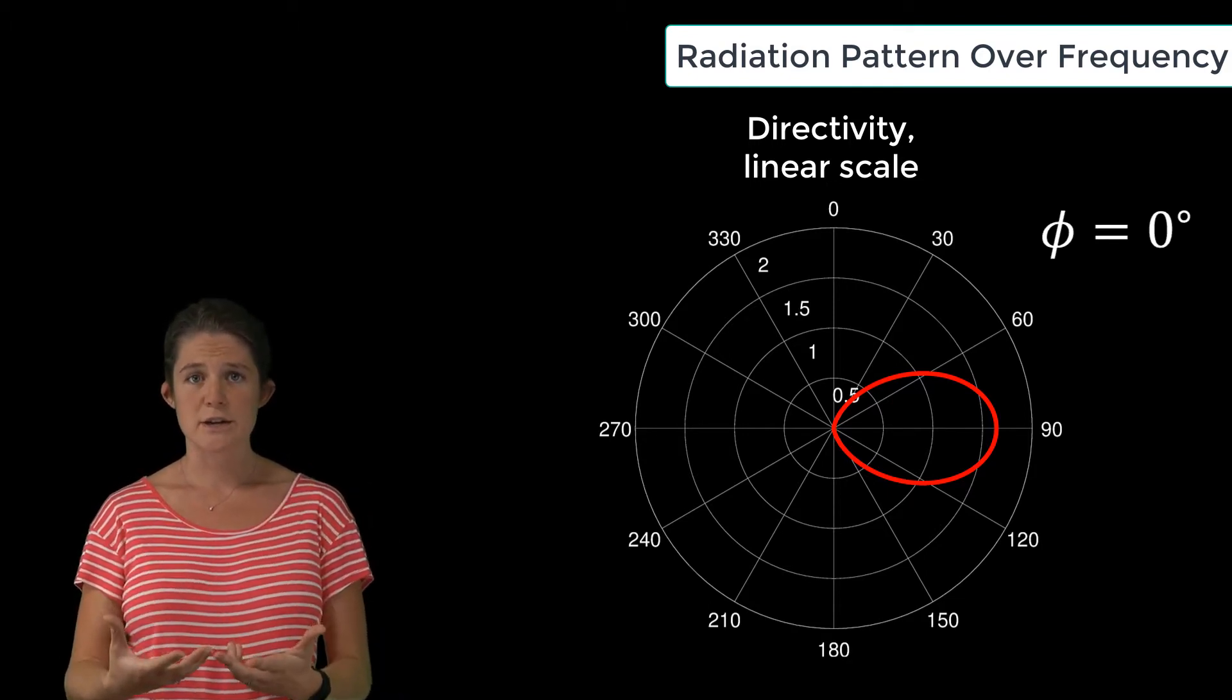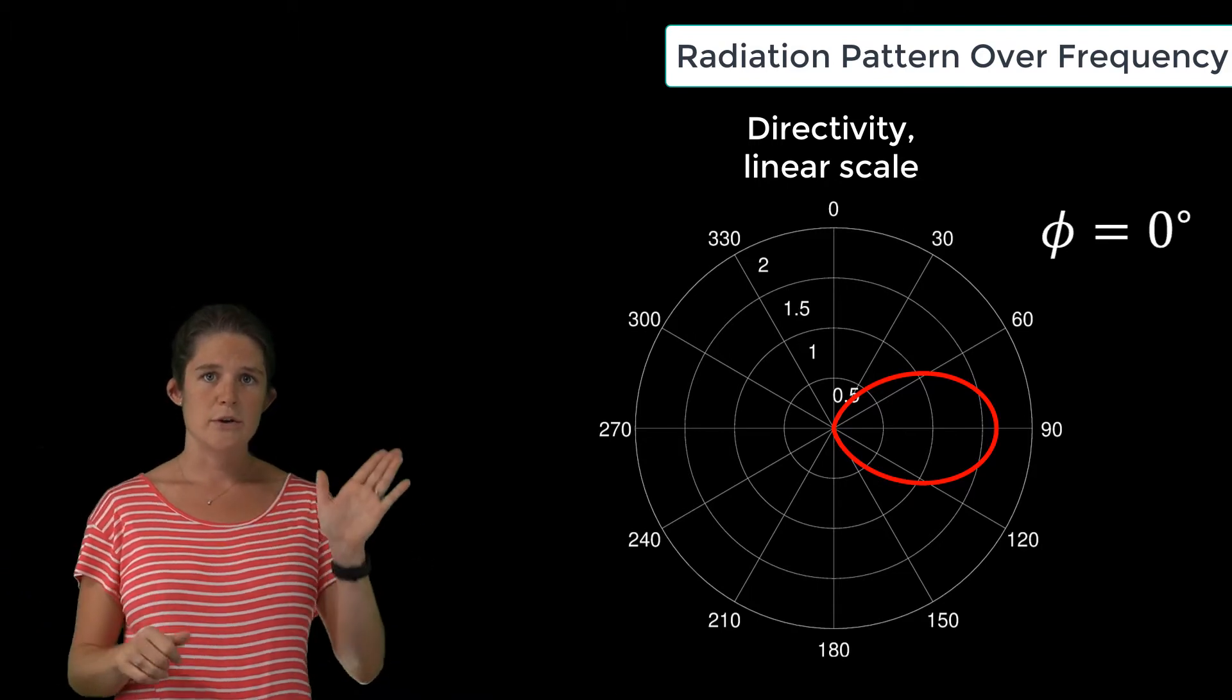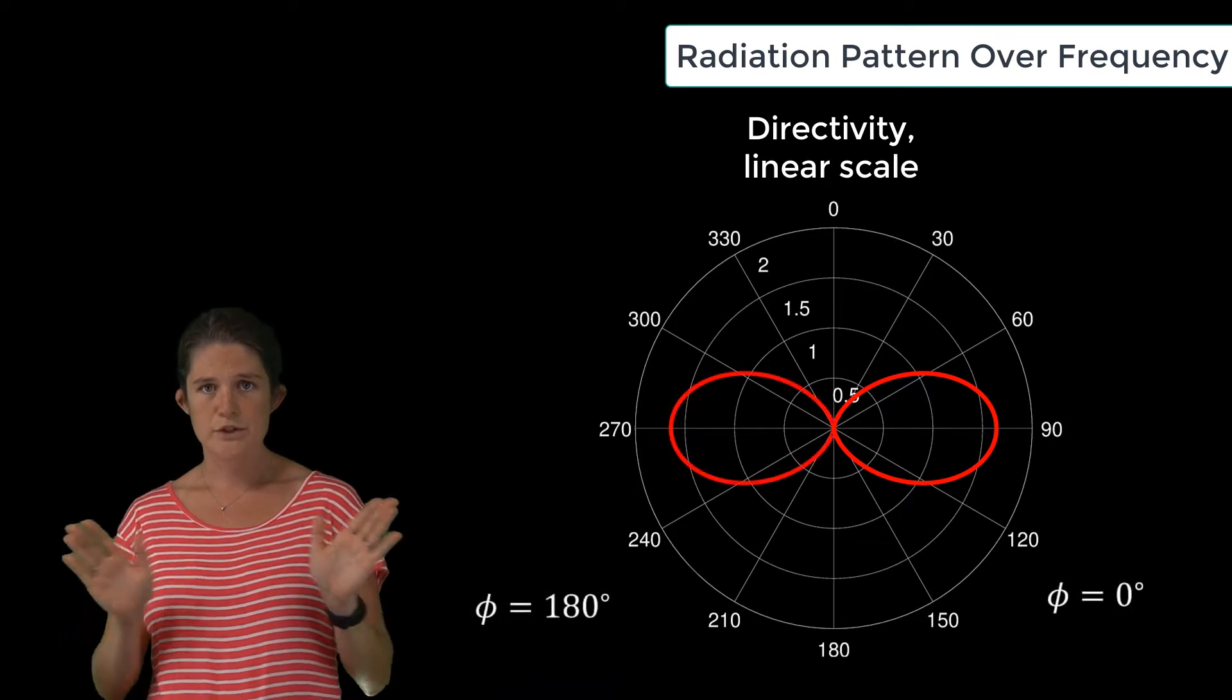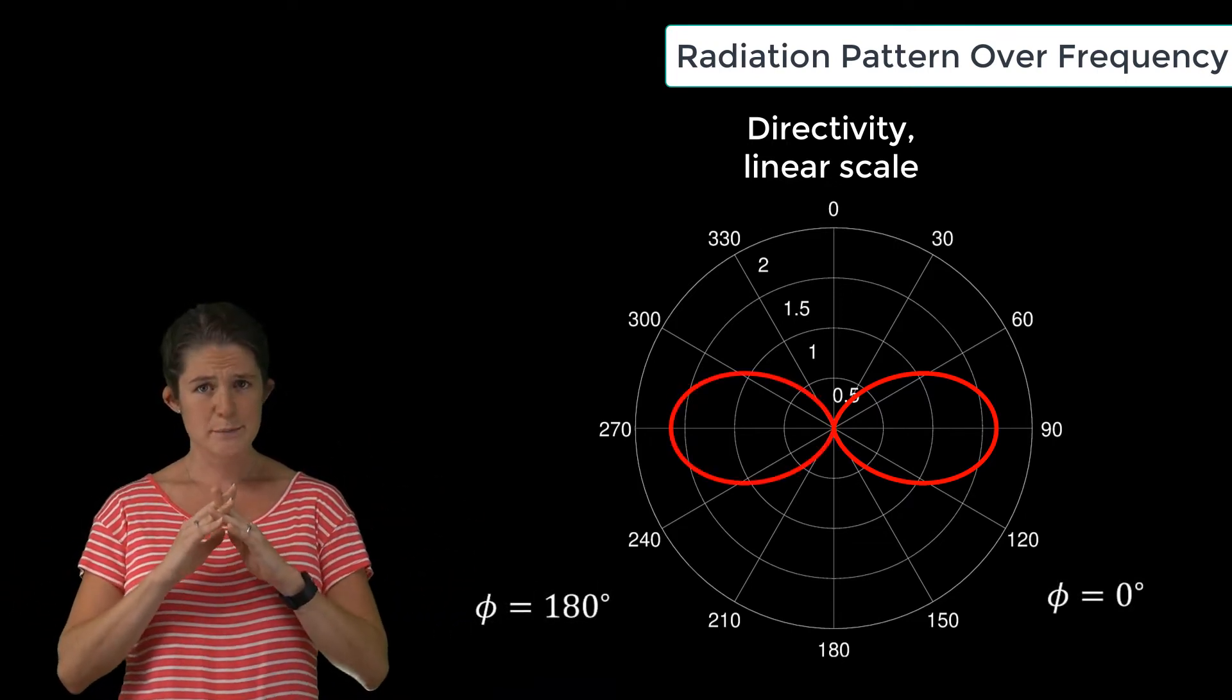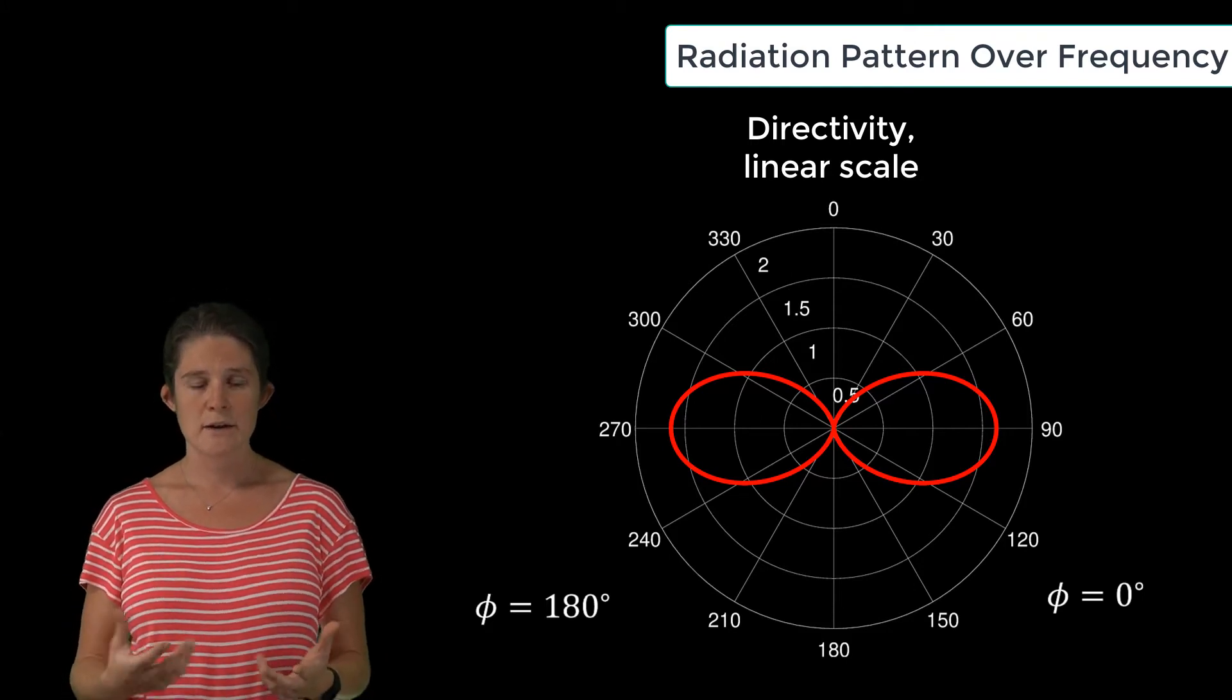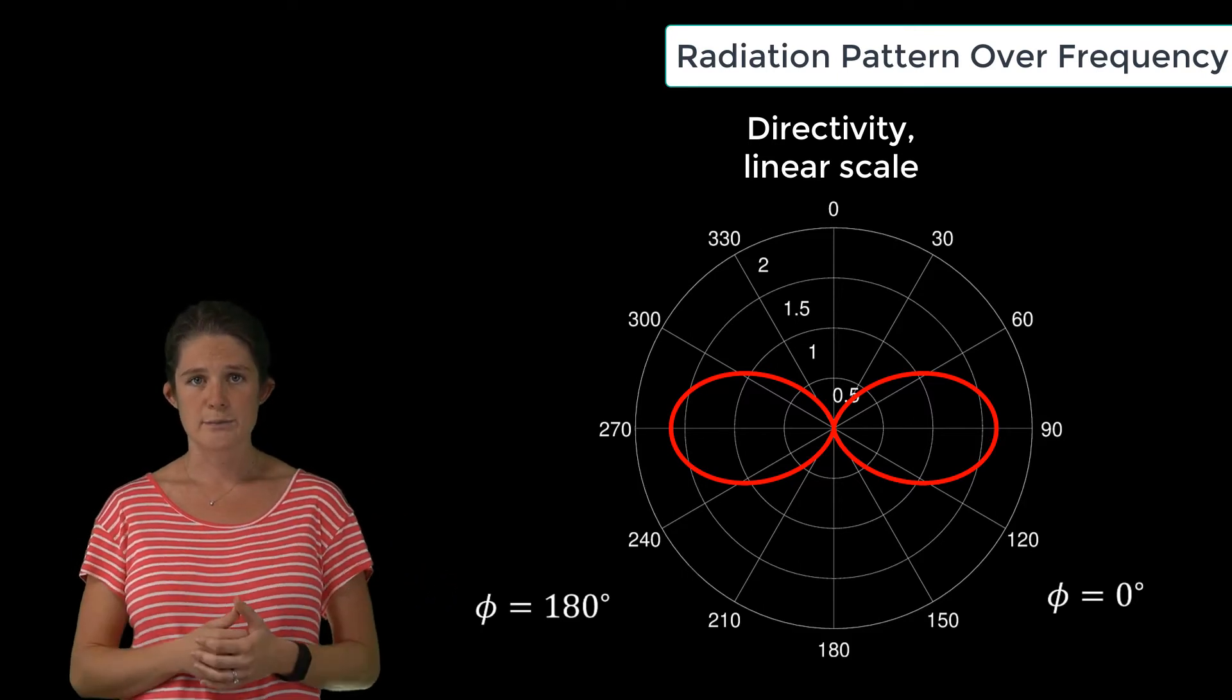Now for ease of visualization, I like to also plot the other half of the plane we're looking at. So on the other side of Phi equals zero, we have Phi equals 180. This is purely a matter of preference. It's exactly symmetric so there's no information being added here, but this is my preferred format and I'll be using it for all of my radiation plots.